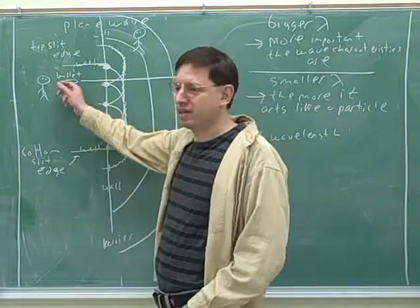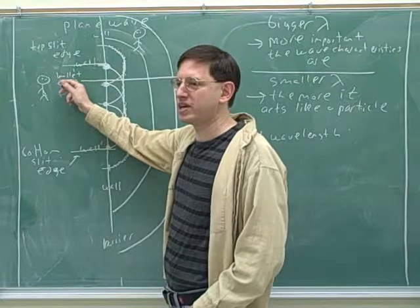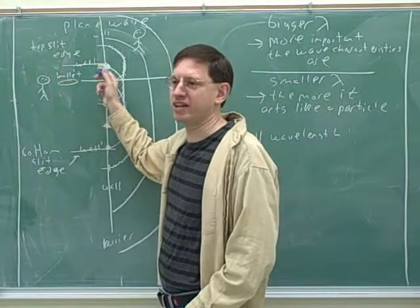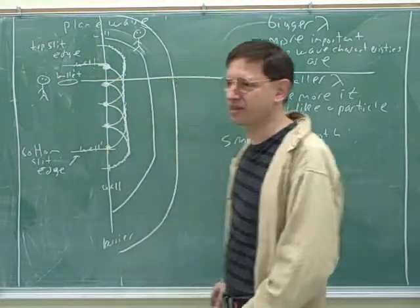So, say, like this bullet. The wavelength of this bullet is so small, relatively speaking, that we can just treat it as moving in a straight line. We don't treat it as bending at all, basically.